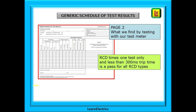A change here is that for RCDs, we only now record a x1 test result, with a maximum tripping time of 300ms for a pass. There is no longer a requirement for a half times test or a 5 times test, but we should always consider these when fault finding. Some newer test meters have the ability to select different types of RCD when the test current will be slightly above 1, at 1.4 times, but they still have the same 300ms maximum tripping time for a pass.